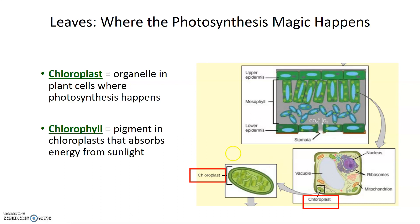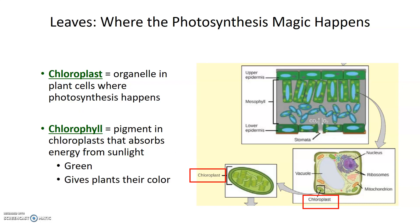There is a pigment that exists within the chloroplasts called chlorophyll, and this is the pigment important for absorbing energy from sunlight. Chlorophyll can absorb all wavelengths of sunlight except for green. Visible light or sunlight is made up of red, orange, yellow, green, blue, and violet light — all the colors of the rainbow.